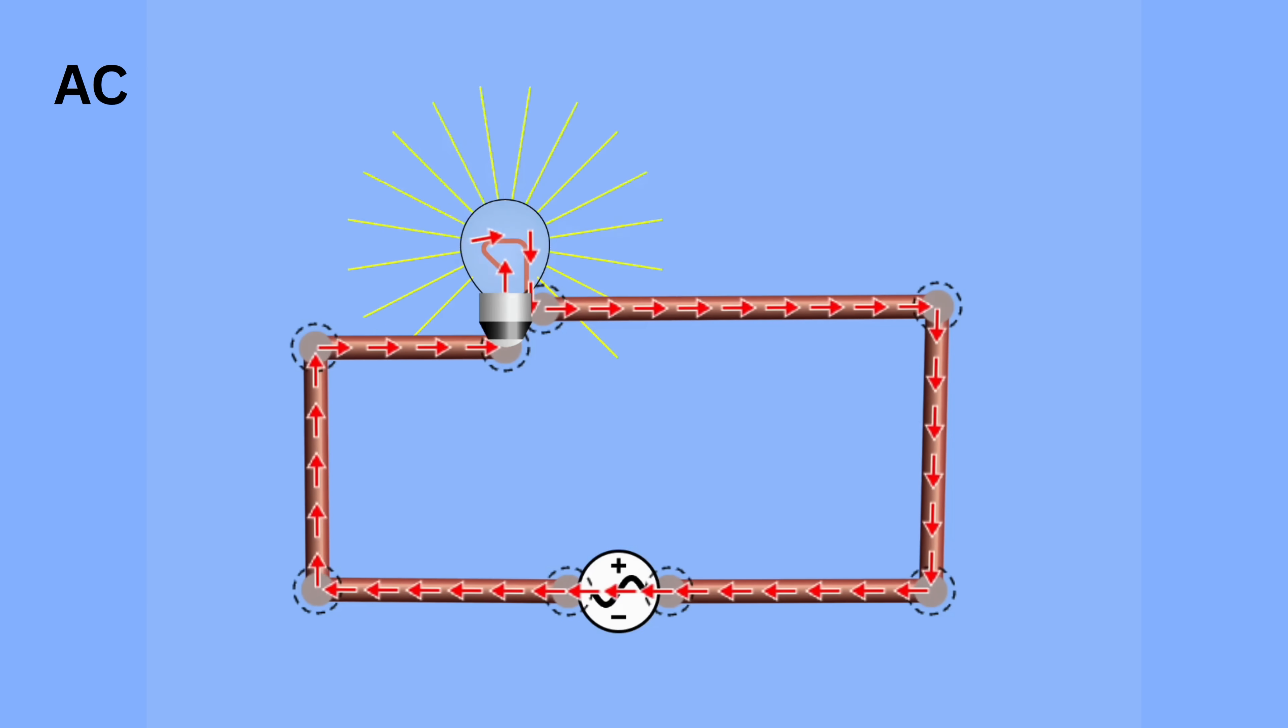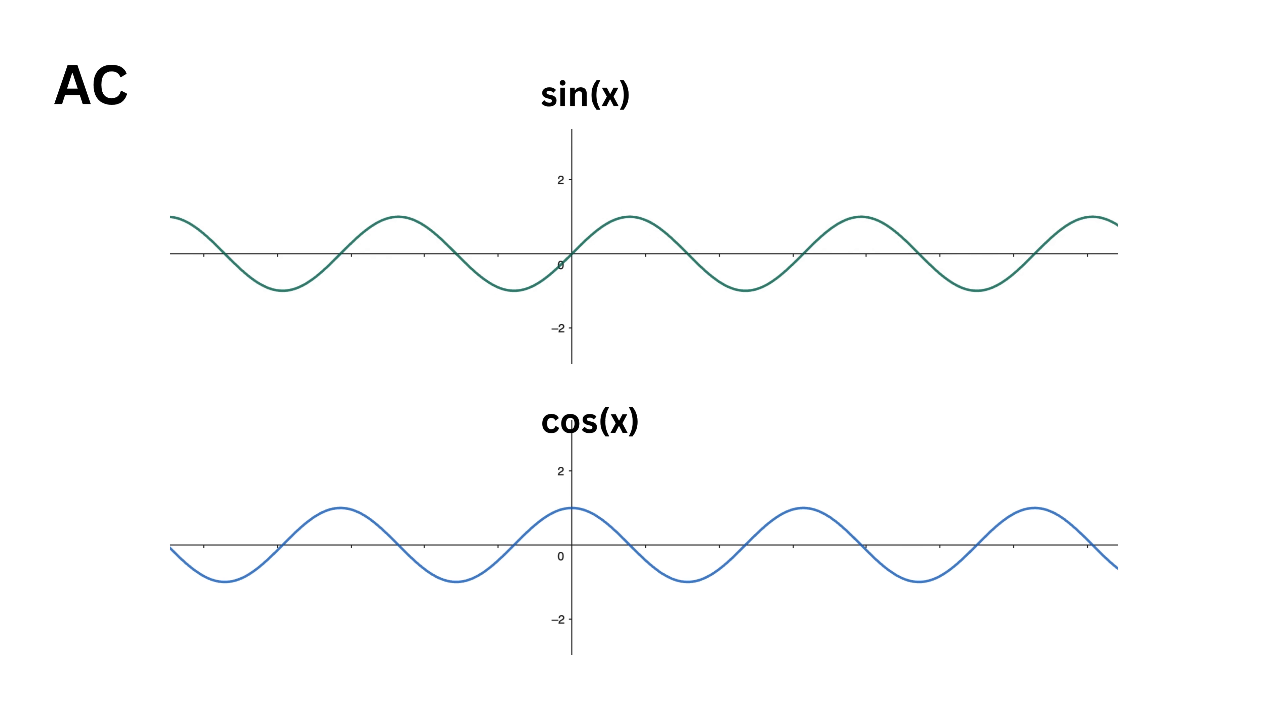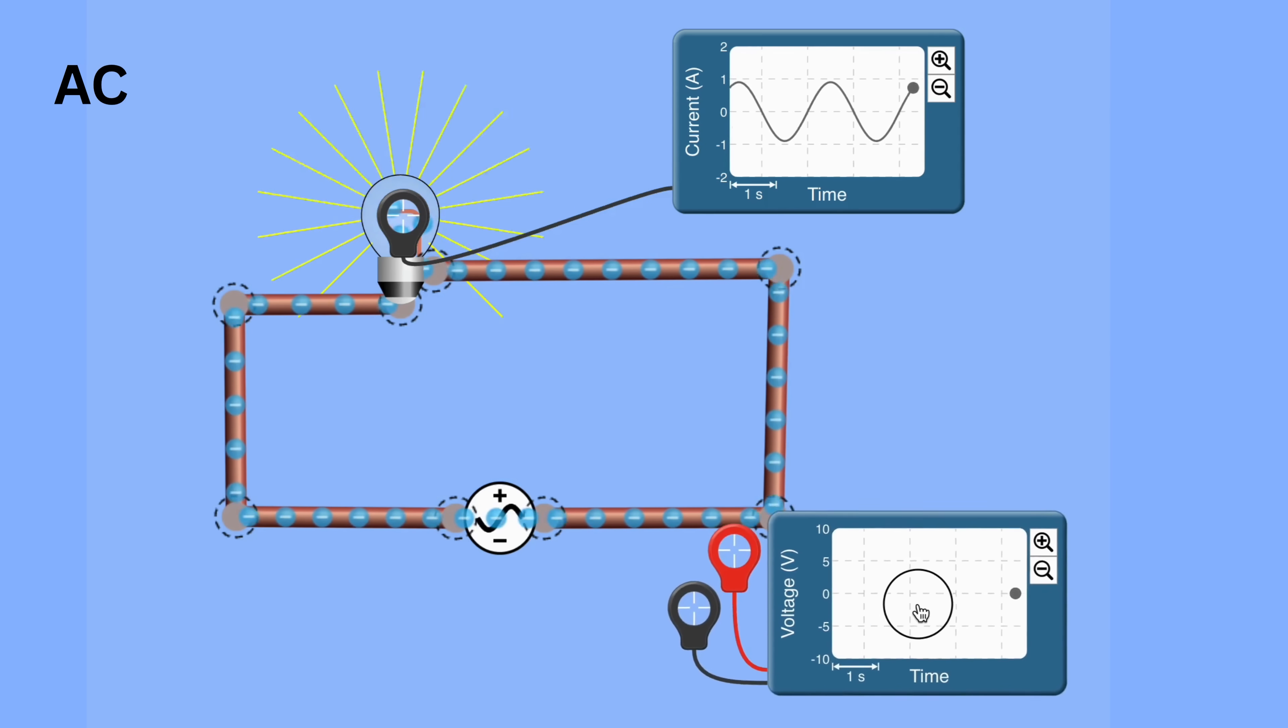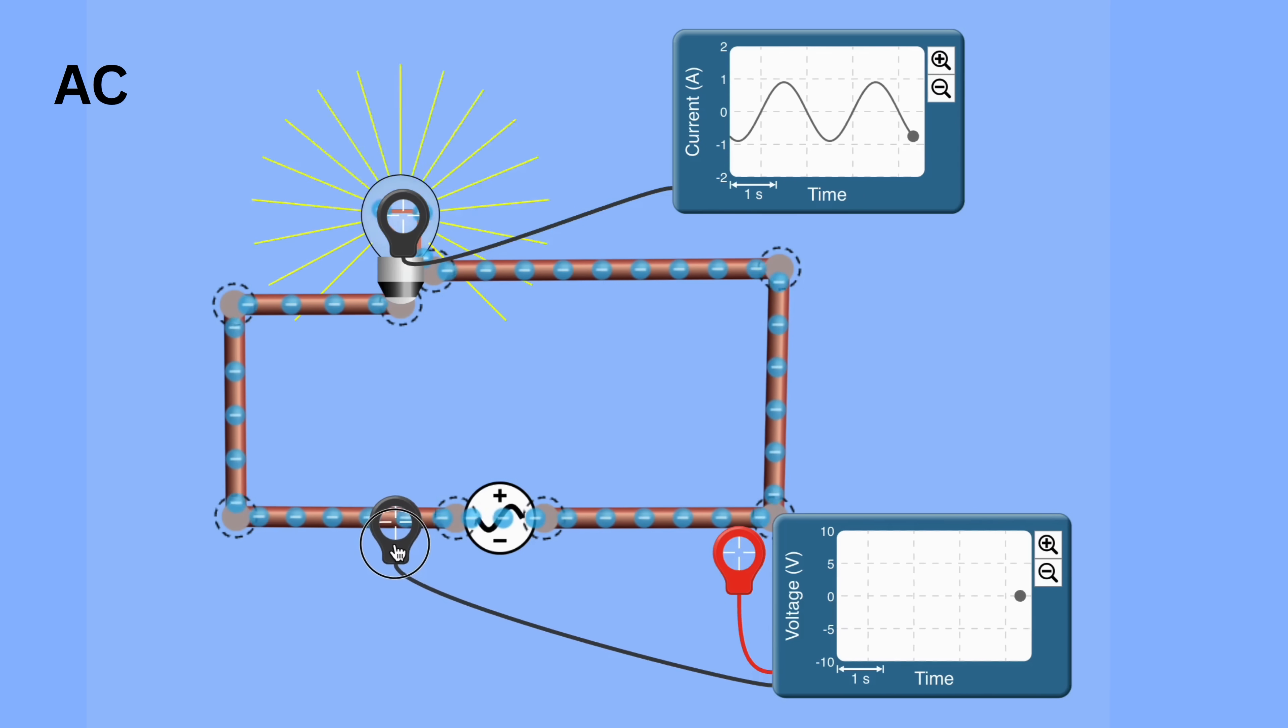This alternating happens very quickly. Now, you might have seen these graphs of sine and cosine waves. We call a wave a sinusoidal wave, which can either be a sine wave or a cosine wave. In electricity, this shape perfectly represents how AC voltage or AC current varies with time.